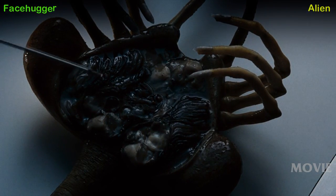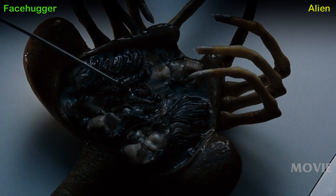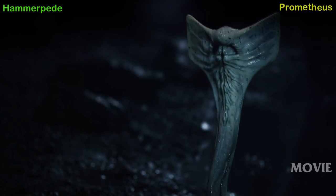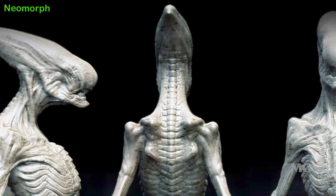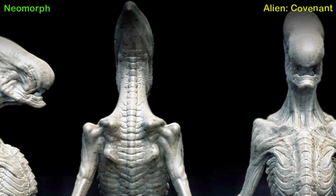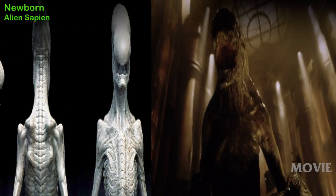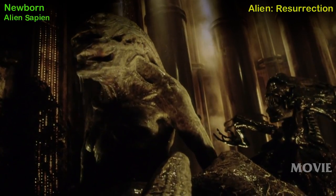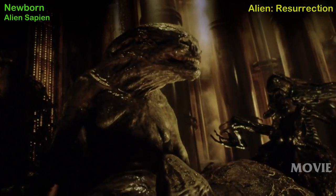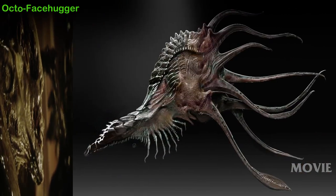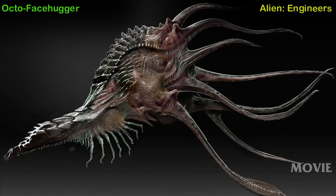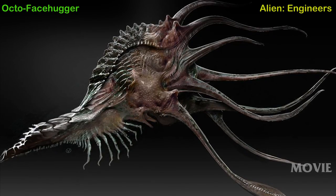Movie Alien Facehugger, first appearance — movie Alien. Hammerpede — Prometheus movie. Neomorph — Alien Covenant movie. Newborn Alien, also known as Alien Sapien — Alien Resurrection movie, first appearance. Octo Facehugger — Alien Engineers, a script that evolved into the Prometheus movie from which this morph was excluded.